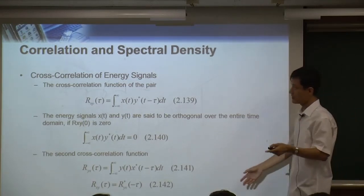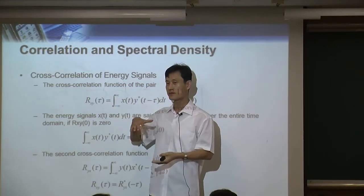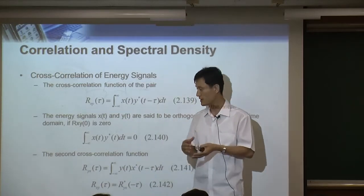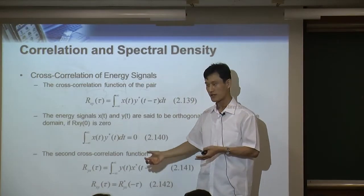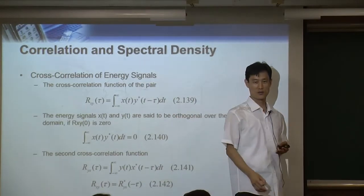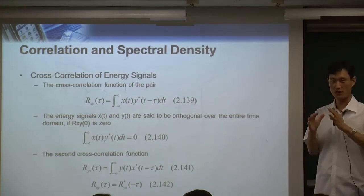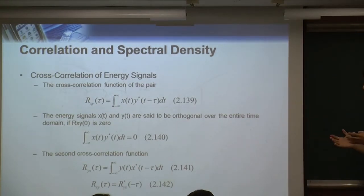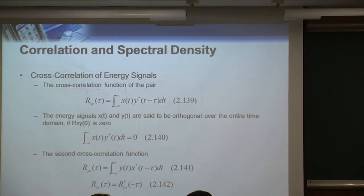So cross correlation is always better when small — ideally zero. Cross correlation equal to zero means the signals are completely orthogonal, which is perfect. Energy spectral density and power spectral density will be discussed next week in more detail.